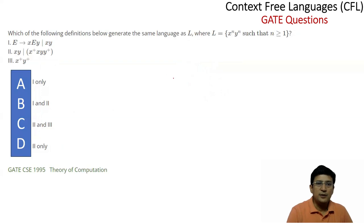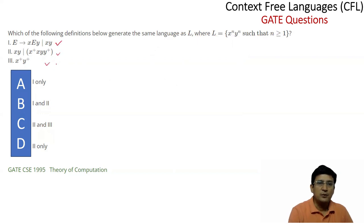Now let's take another question. It says: which of the following definitions below generate the language L, where L = { x^n y^n | n ≥ 1 }? There are three descriptions given — the first is a grammar, and the other two are regular expressions. We need to determine which of these generates x^n y^n where n ≥ 1.